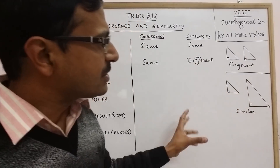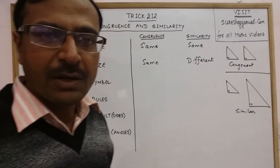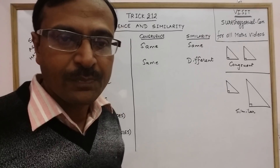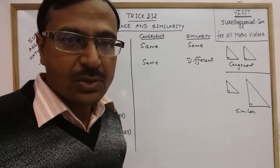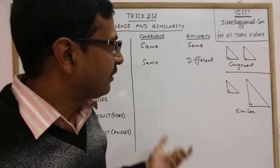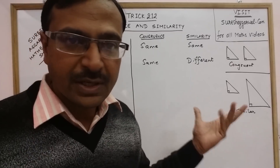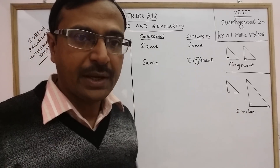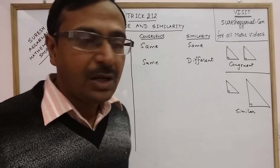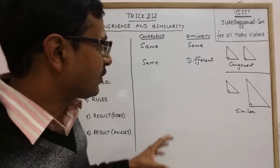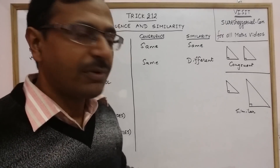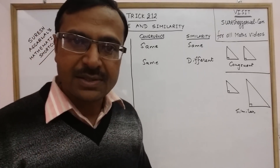Similar figures can exist in the case of circles, trapeziums, rhombuses, rectangles, and squares — any figure can be similar. But the concept of similarity is basically taught in the case of triangles.